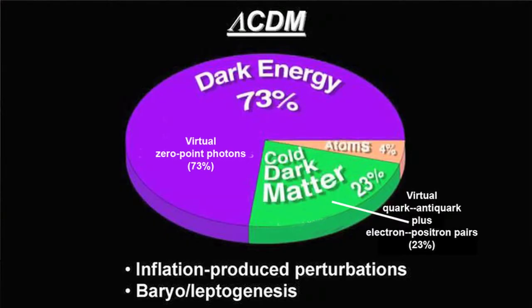What about the 23%? What about the dark matter, which operates on a smaller scale? Those are virtual quark–anti-quark pairs — they're what are called fermions — and virtual electron-positron pairs, all inside the vacuum. The virtual quarks and the virtual quark–anti-quark pairs and the virtual electron-positron or anti-electron pairs all have the opposite effect. They're 23% of the stuff of the world. They cause attractive gravity.